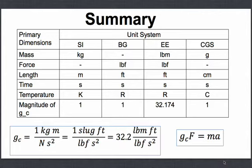For the British system, mass is not a primary dimension, force is pound force, length is foot, time is second, and temperature is rankine. The magnitude of GC for this system is also equal to 1. For the English system, the primary dimension for mass is pound mass, for force it is pound force, length is foot, time is second, and temperature is rankine. The magnitude of GC for this system is 32.174.